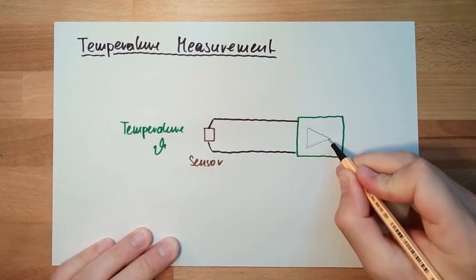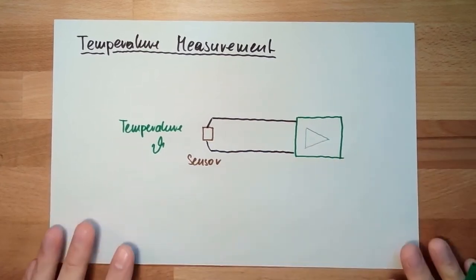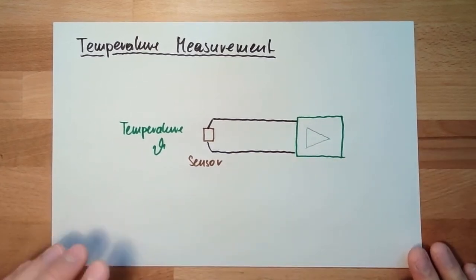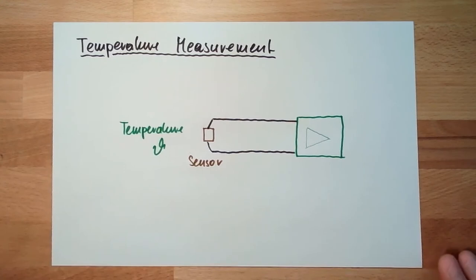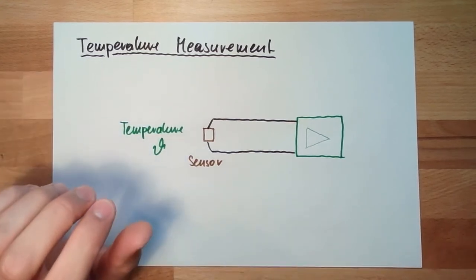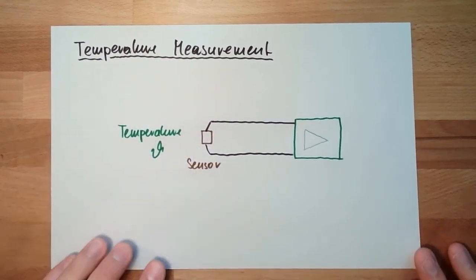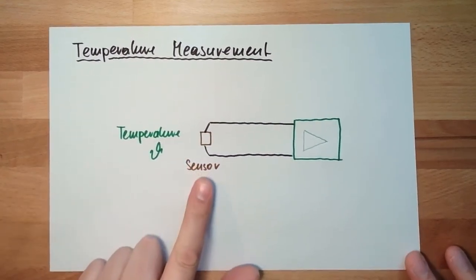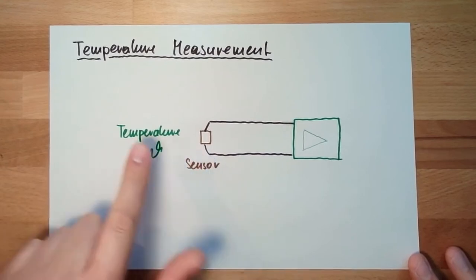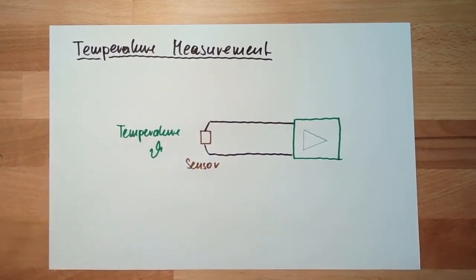So what we actually measure, what we actually measure is not the temperature where we are interested in. We do measure the temperature of the sensor. This means the temperature of the sensor needs to have the same temperature as we want to measure. It's obvious.